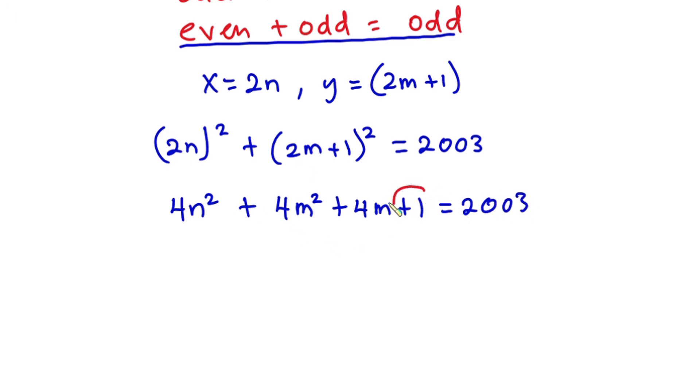Now let's go ahead and then move this positive one to the right hand side of the equation. So that we get 4n² plus 4m² plus 4m is equal to 2002.